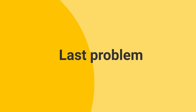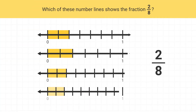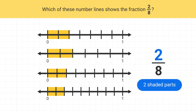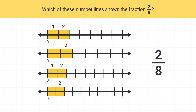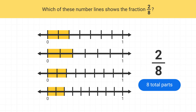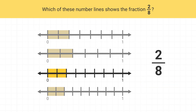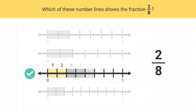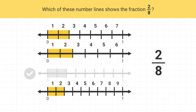Now here is your last problem for this video. Which number line shows the fraction 2 eighths? The numerator of two means we should have two shaded parts. It turns out that all of these number lines have two shaded parts. So the next thing to look at is the denominator of eight, which means our number line has eight total parts. If you count carefully, you can see that only this number line has eight total parts. The other number lines do not have eight total parts, so they are not correct.